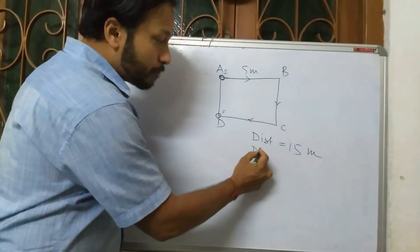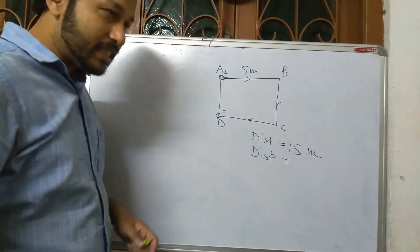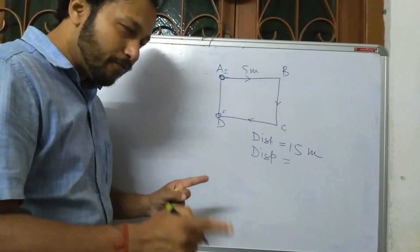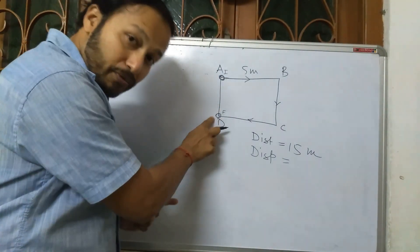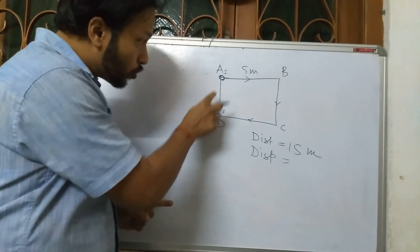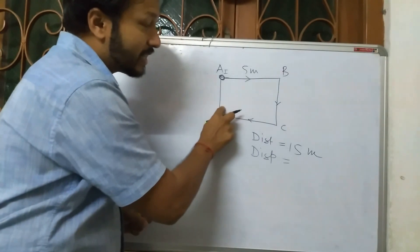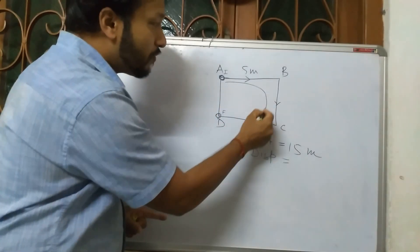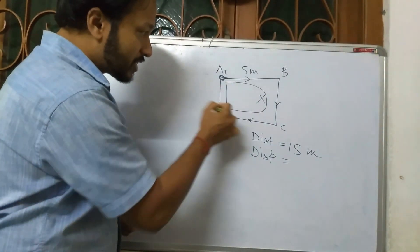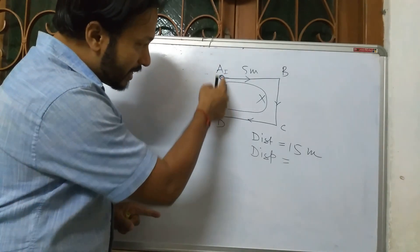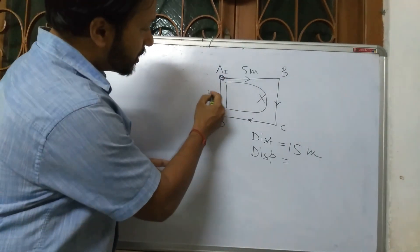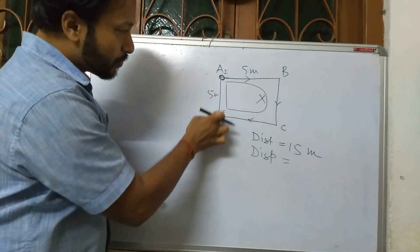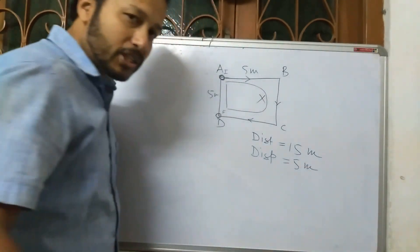Now, what is displacement? Displacement is the straight path from initial to final. This is the initial position, this is the final. We will not take the actual path — I said straight path. This straight line is 5 meters, because this is a square and all sides are the same. So displacement is 5 meters.